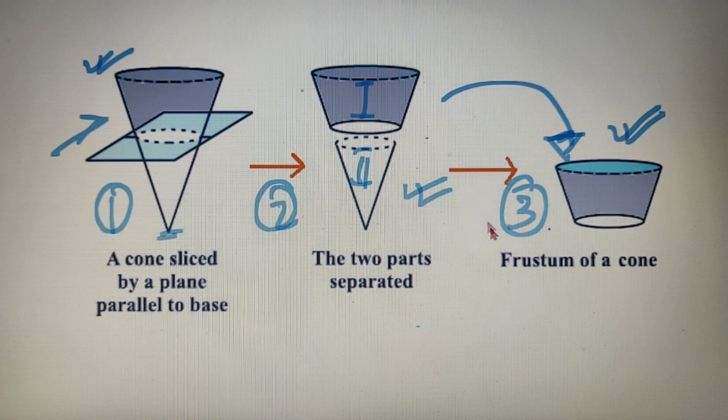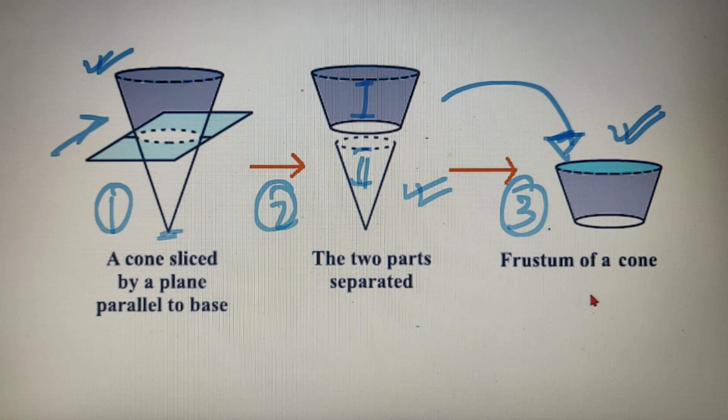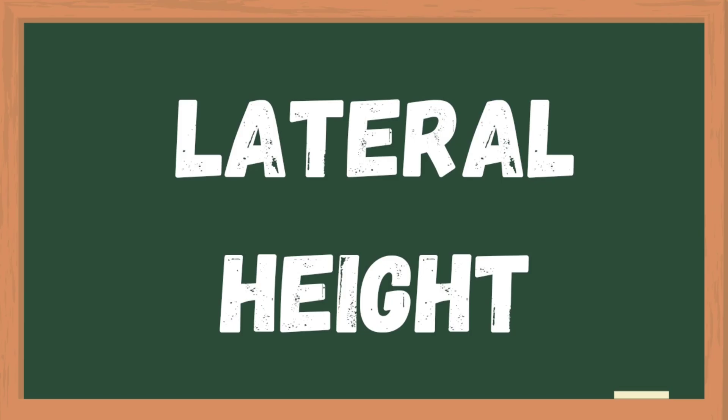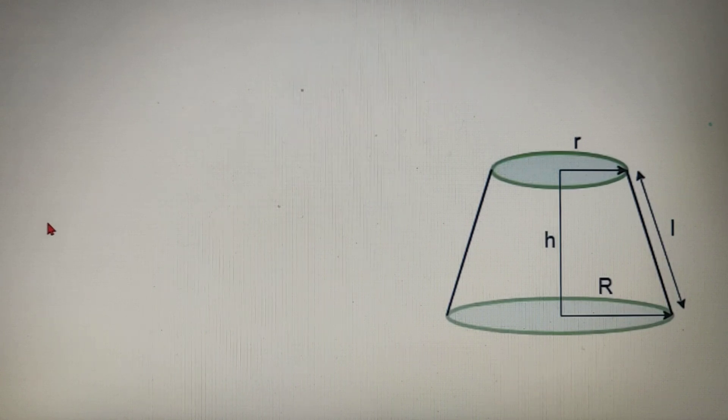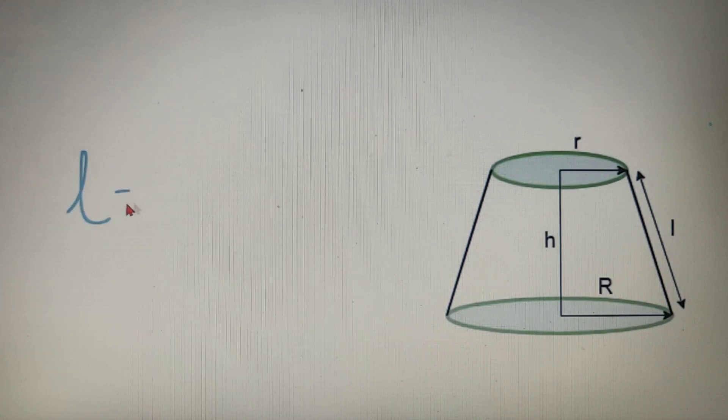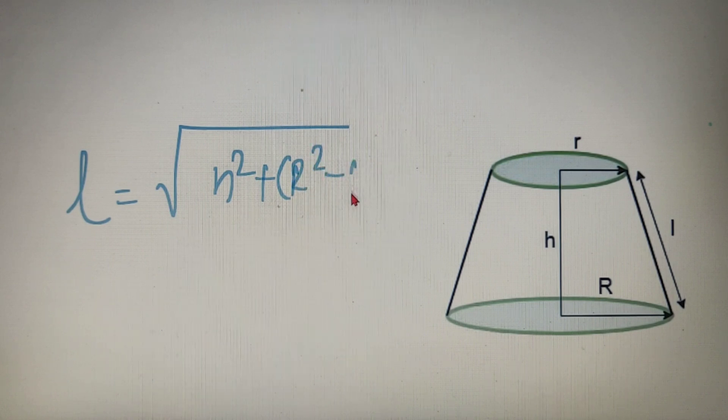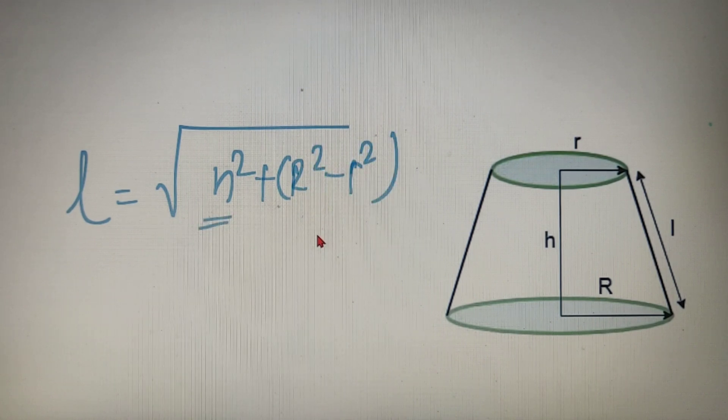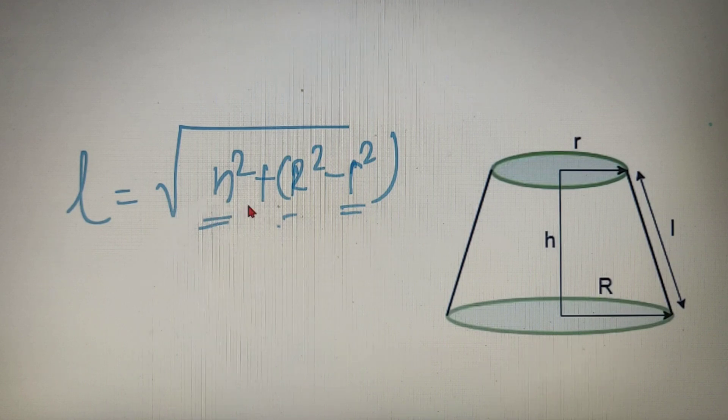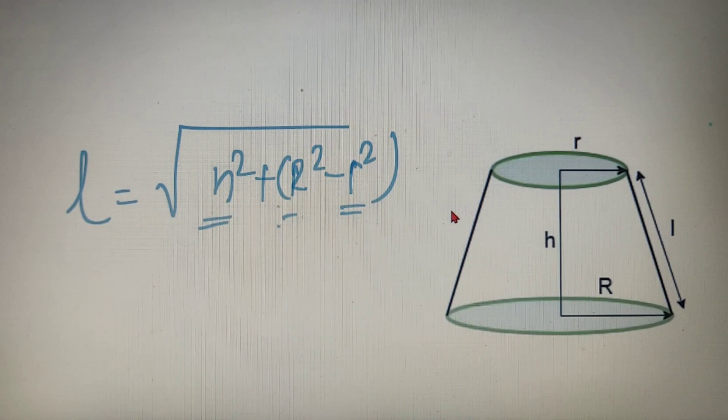So let's discuss all the important formulas that are required for solving any question related to a frustum of a cone. So the value of the slant height of a frustum is equal to under root of h square plus capital R minus small r square. Where h is the height of the frustum, capital R is radius of the base and small r is radius of the top. So lateral height of a frustum is equal to under root of h square plus capital R square minus small r square.